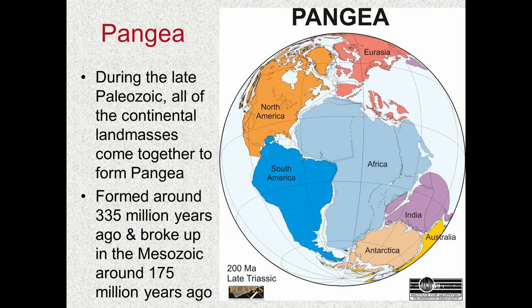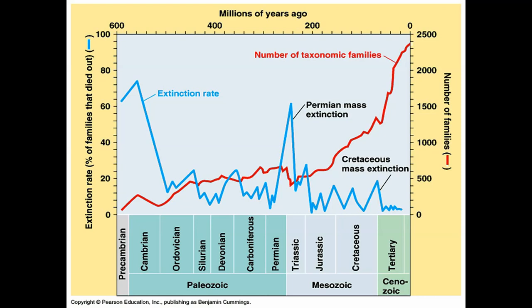Pangea. We've talked about Pangea already and plate tectonics, but we think during the later stages of the Paleozoic Pangea comes together — maybe about 335 million years ago. It lasted all throughout the late Paleozoic into the Mesozoic where it finally begins to break up about 175 million years ago. So Pangea was a fairly long-lasting supercontinent. Here's where we are on our journey — the early Paleozoic, the middle, and now we're at the end of the late Paleozoic. This is where we have the largest extinction event in Earth's history. Most people think of the Cretaceous extinction event, but it was much smaller than the Permian one.